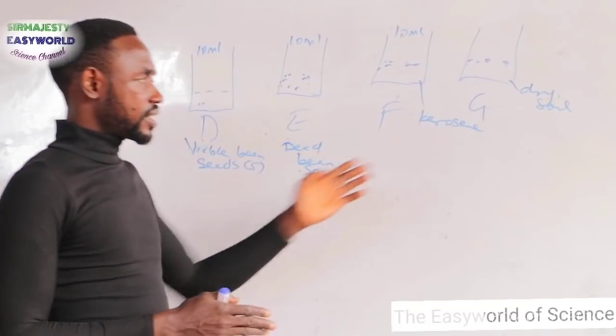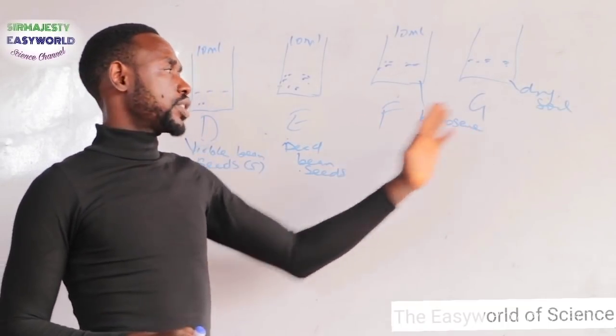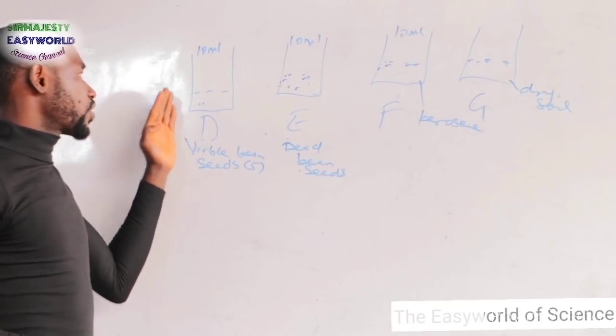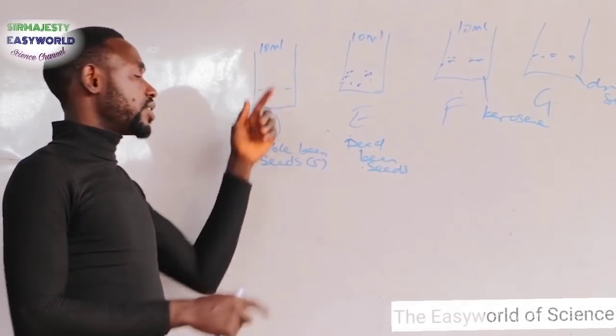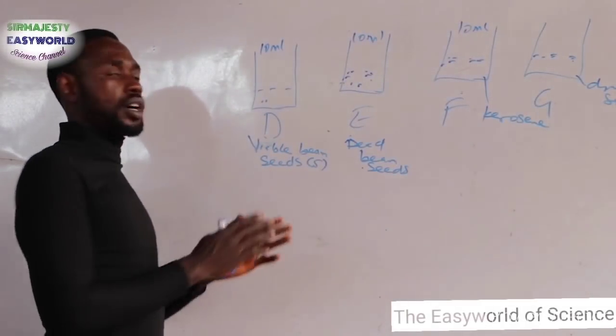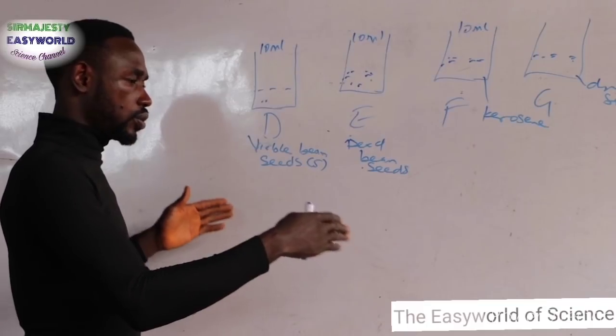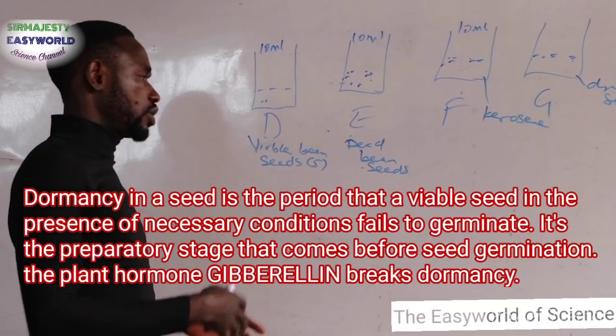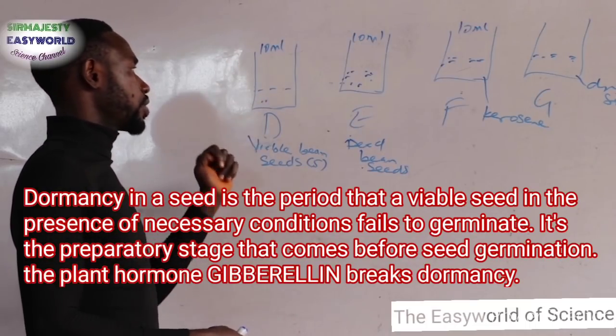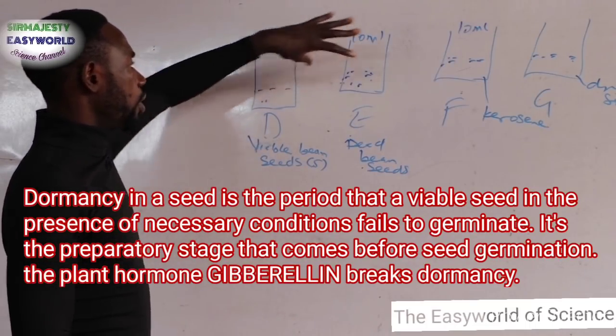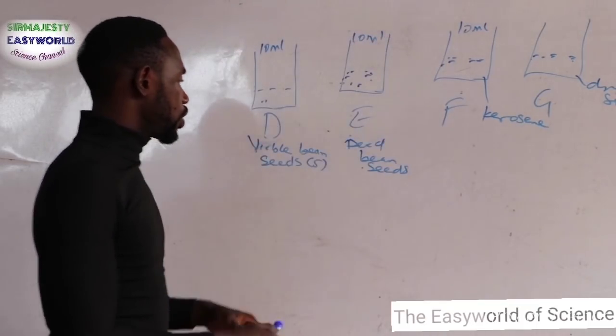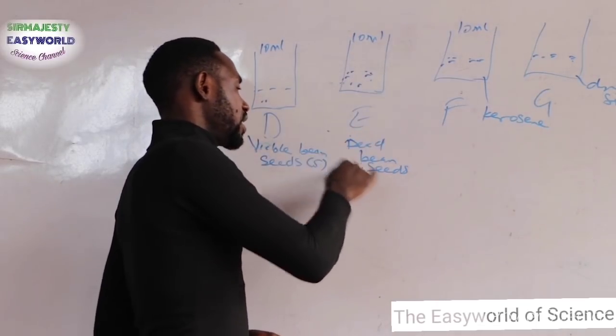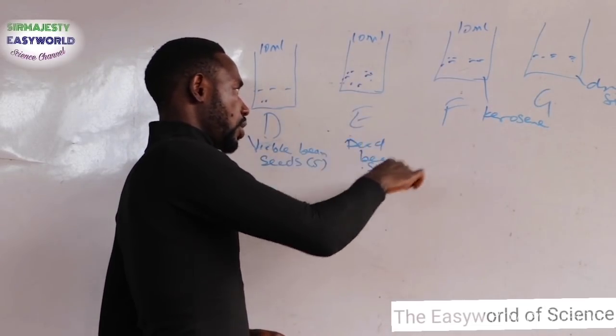Looking at this setup, out of the things I've mentioned, it's only optimum temperature that they don't want to demonstrate. This first particular beaker D contains soil with water. There is air, the seed is viable, and we keep it at room temperature for a week so the dormant stage can be overpowered and germination will take place. So all conditions are here. But in E, they are trying to tell you the factor of viability. The seed is dead already, so there is no germination in this.